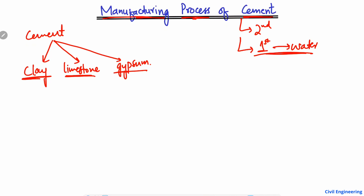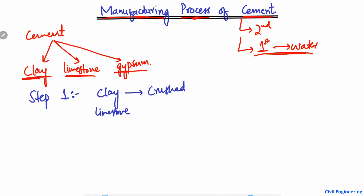Now let's talk about the manufacturing process. In step number one, the clay material is extracted from the site and crushed in a mixing machine into smaller pieces. In a similar way, the limestone is also crushed by machines into smaller pieces. So in step one, the clay and limestone are crushed.